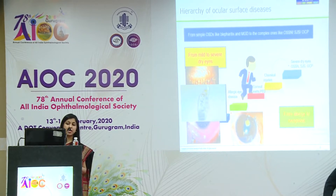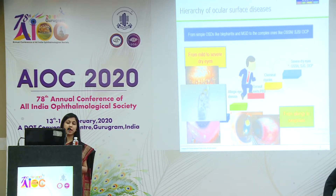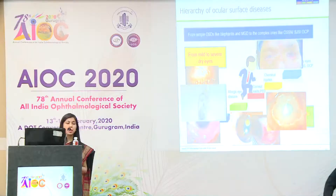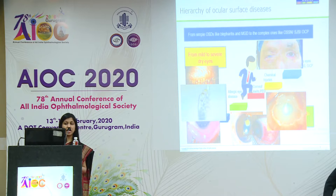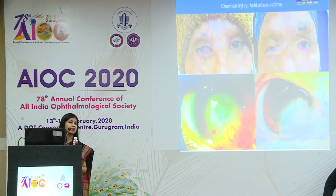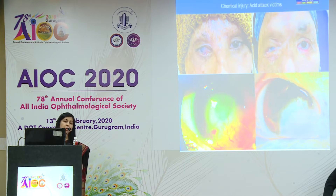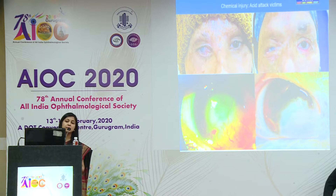Allergic eye diseases like VKC with a shield ulcer and a plaque, the gelatinous limbitis that we see, persistent epithelial defects, chemical injuries including acid attack victims and alkaline injuries — the acid attack victims especially are the difficult ones to treat. They need a lot of psychological support along with the medical management that we carry on for them.